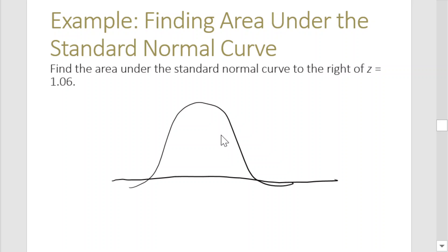The question asks for the area to the right of z. Since it's positive, it will be around here at 1.06. So the z value is 1.06, this is 0, and we're finding the value of the area to the right, which is this area here.